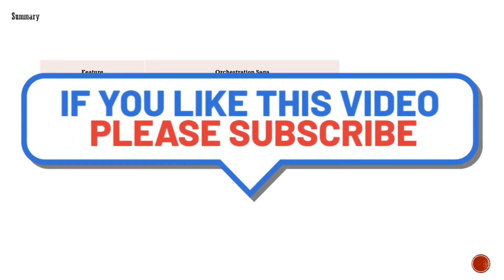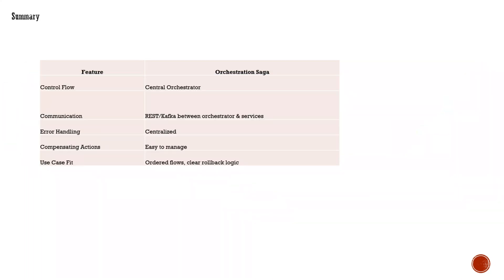In summary: the control flow uses central orchestration. Communication can be done via REST or Kafka, depending on your service and architecture design. Error handling is centrally managed, and compensating actions are easy to initiate on failure. The ideal use case is an order flow where there is a clear rollback logic.